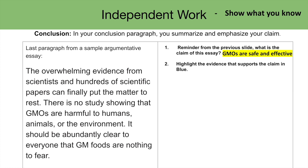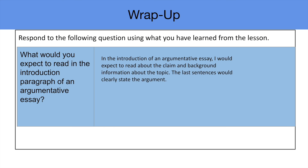Conclusion — last paragraph. Overwhelming evidence from scientists and hundreds of scientific papers can finally put the matter to rest. There is no study showing that GMOs are harmful to humans, animals, or the environment. It should be abundantly clear to everyone that GM foods are nothing to fear. Once again, the claim is that GMOs are safe and effective. Is there evidence in this paragraph that supports the claim?